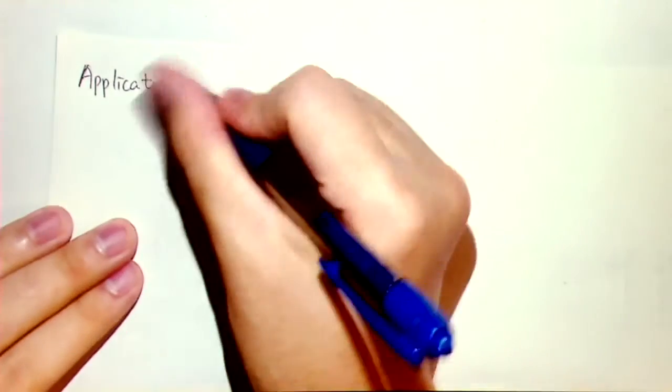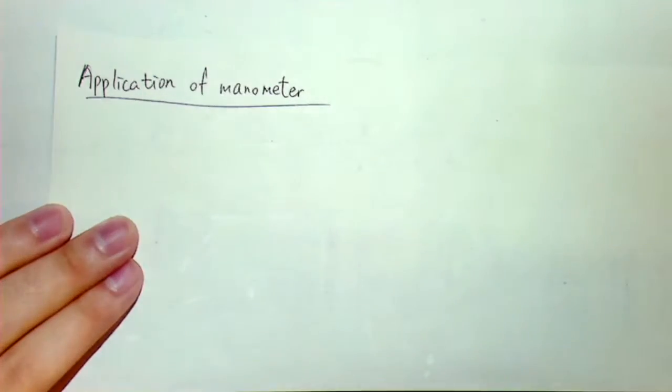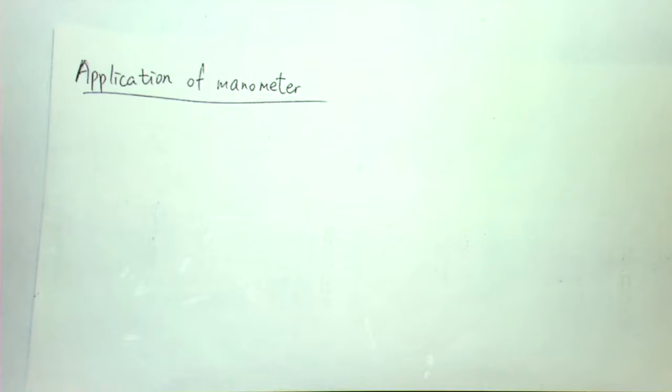For the example of manometer, before we talk about the last example, that is example 9, let us have a simple application of manometer first. We will use a manometer to measure the pressure drops across the horizontal flow section. This kind of pressure drop may be due to the presence of valves, engineering devices, or any resistance to flow.